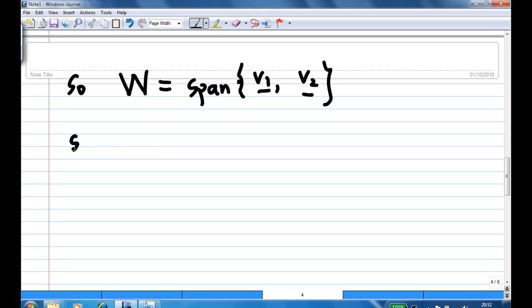Now, since V1 and V2 are not multiples of each other, so V2 is not a multiple of V1, so V1 and V2 are linearly independent.